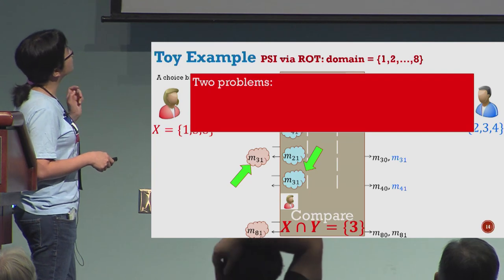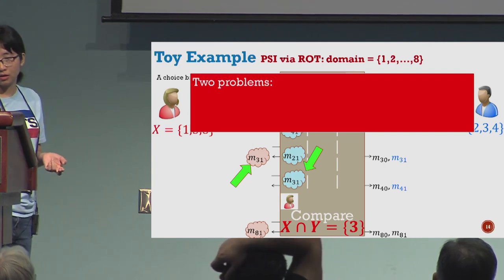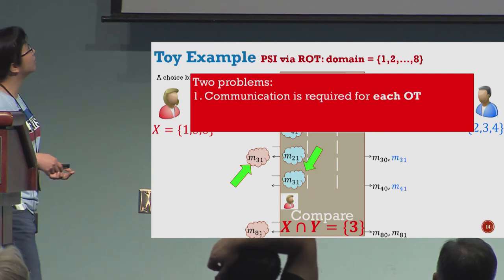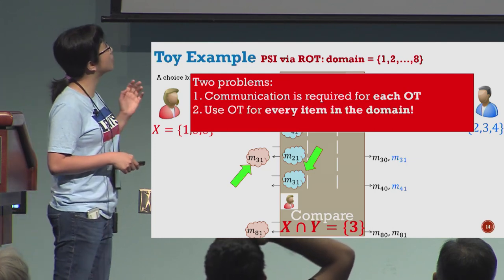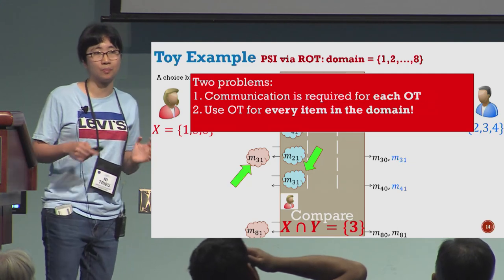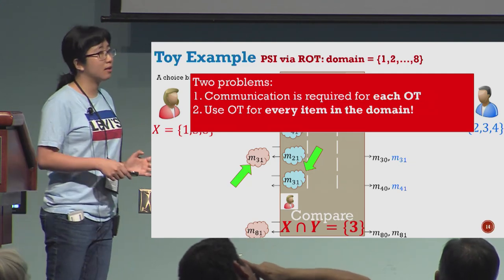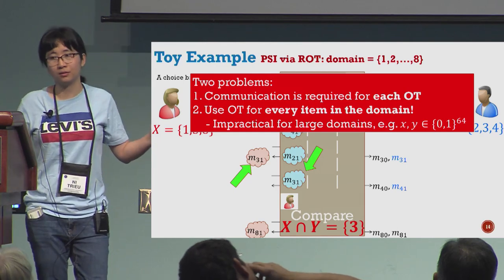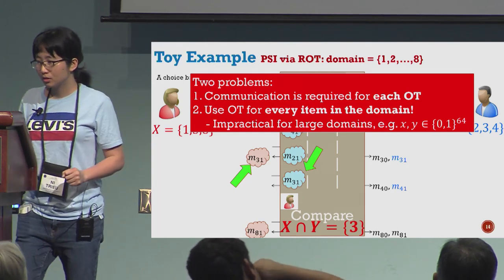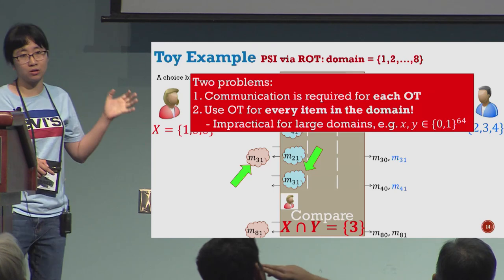This is just an example for PSI using random OT, but there are two problems. Each OT needs communication, and second, you need to use OT for every item in the domain. This is impractical for big domains.